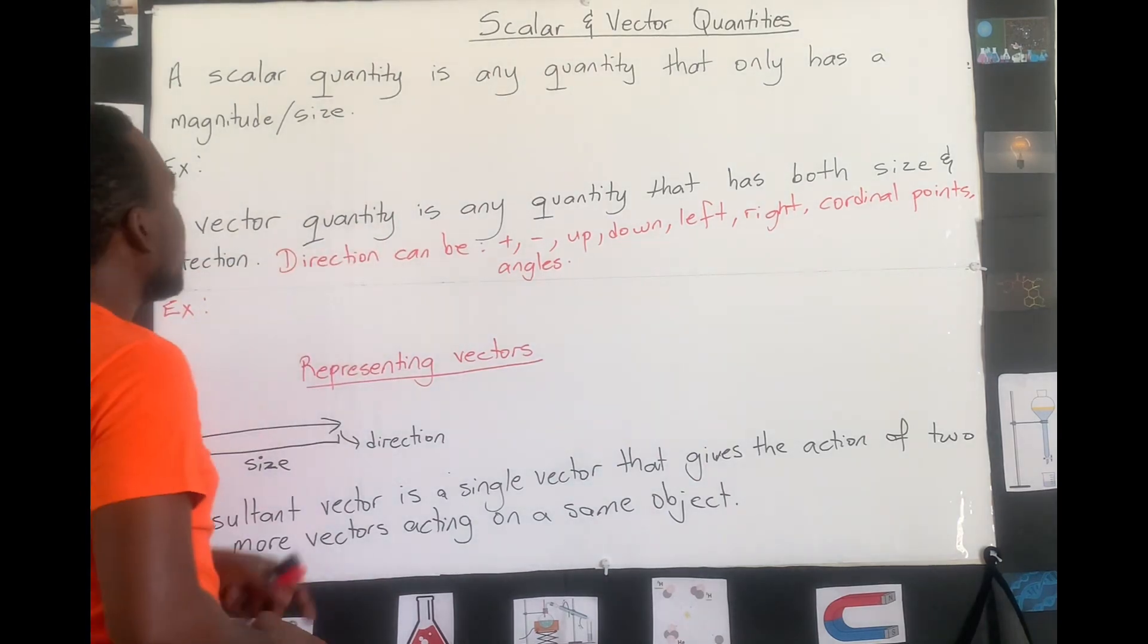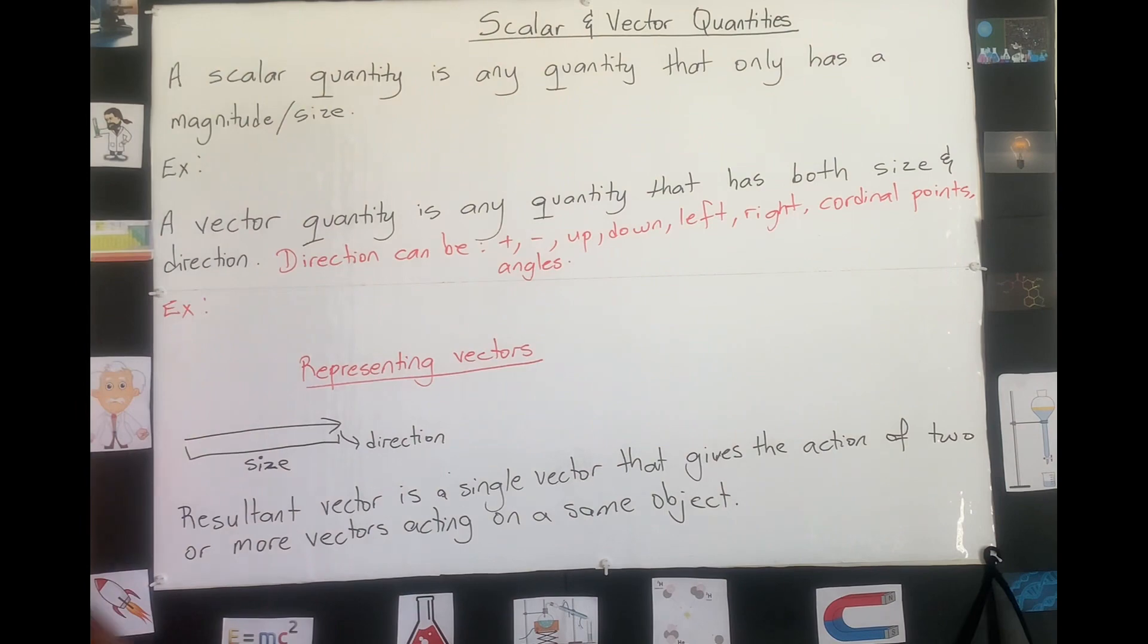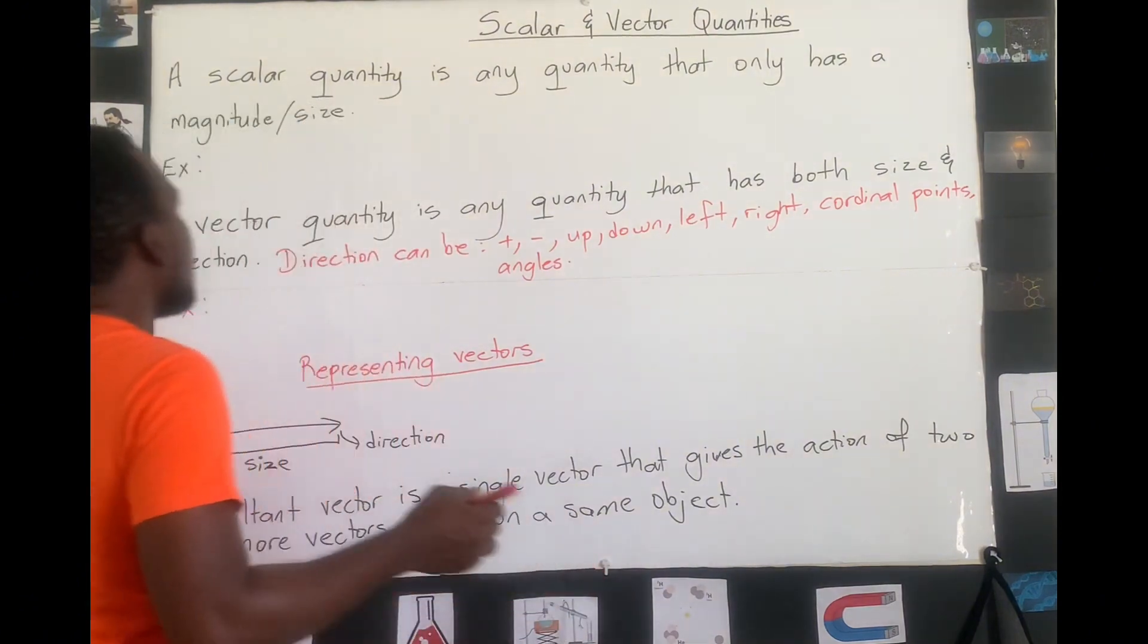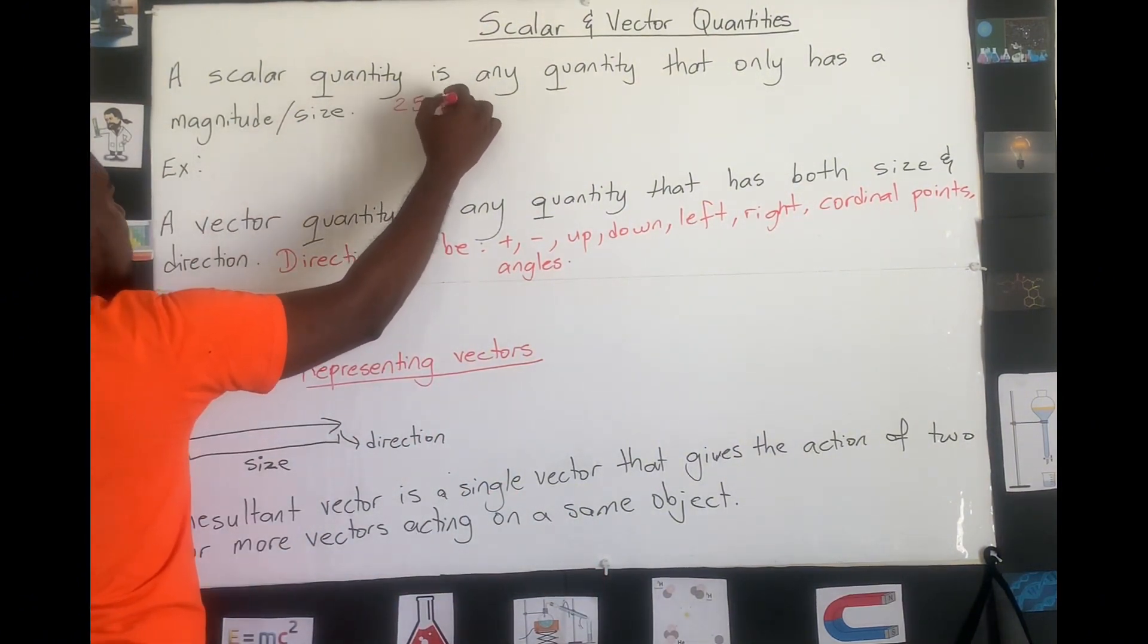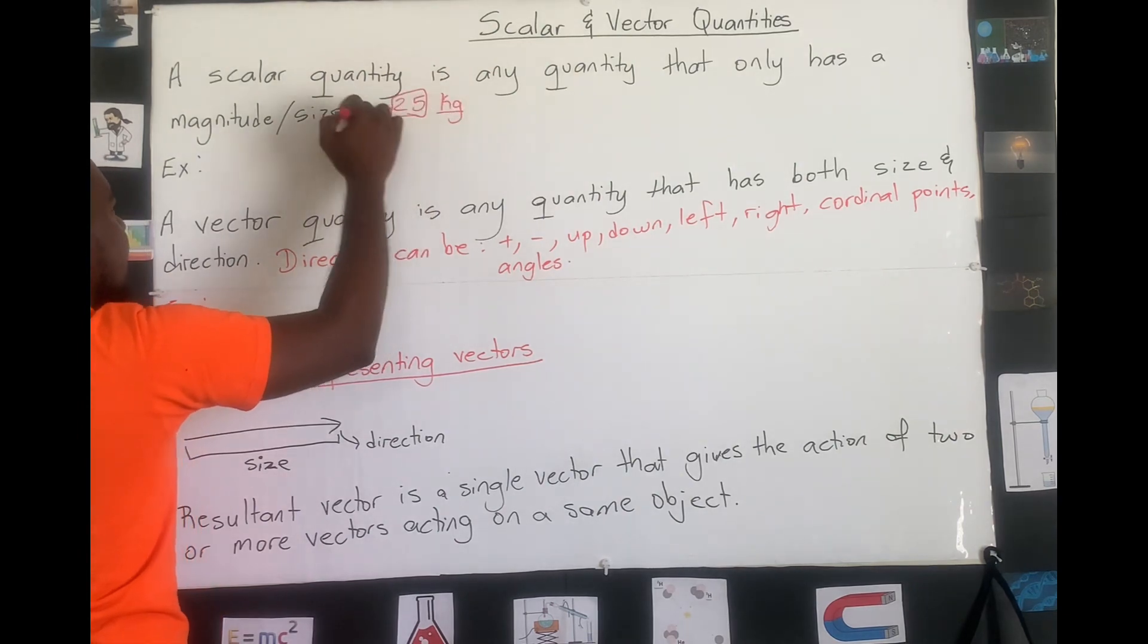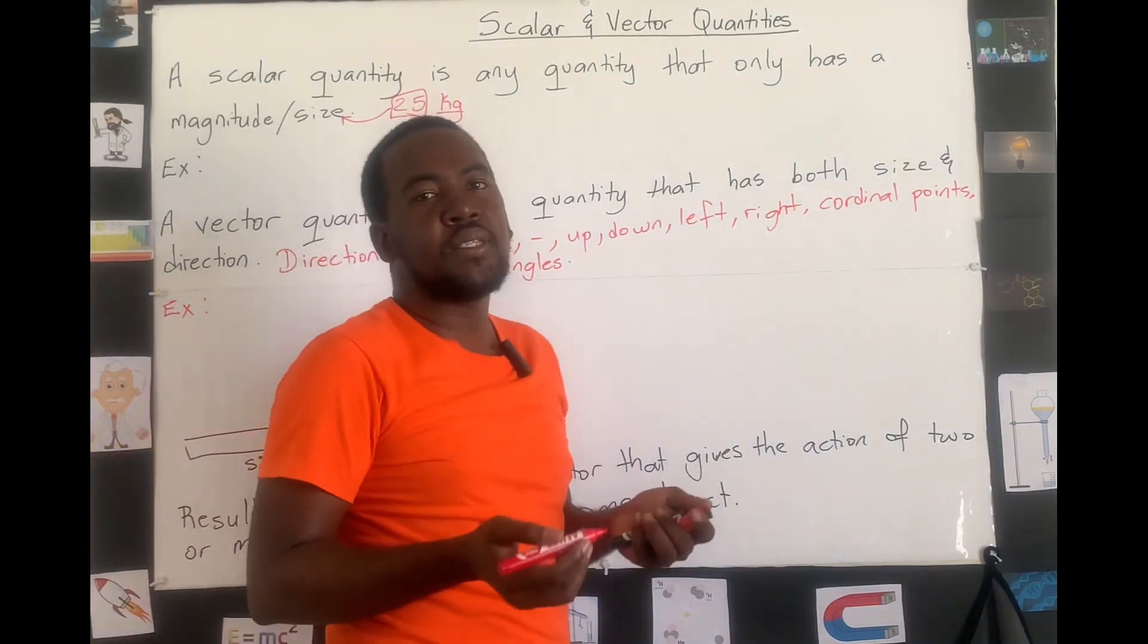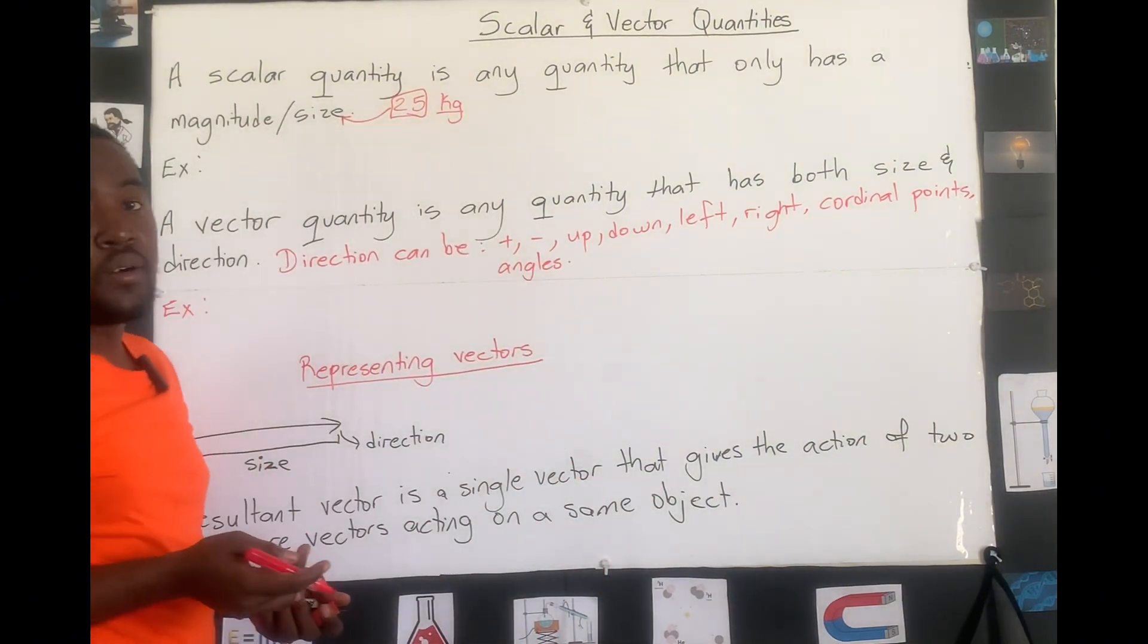What are scalar quantities? Quantities that we only represent them of their size or their magnitude. The size or magnitude means the number beside the unit. So if we say the mass of an object is 25 kilograms, the 25 here represents the size. When we're representing these quantities, we only need to represent their size.